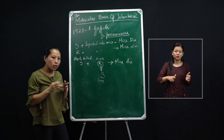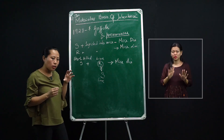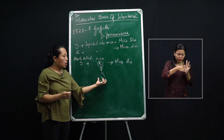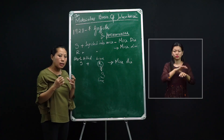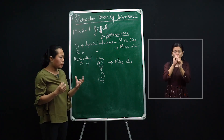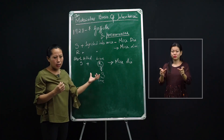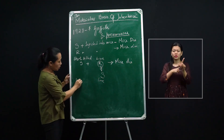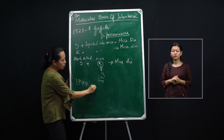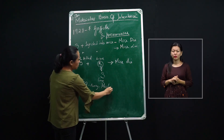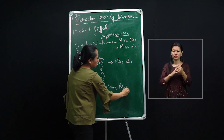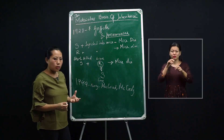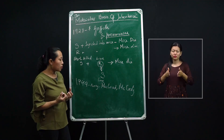However, Griffith could not define the chemical nature of that material. He concluded there is a material which could transform R cells into S strain, but he could not describe exactly what that transforming material was. Many biologists could not accept his experiment. So in 1944, Avery, MacLeod, and McCarty continued with the same experiment to define the chemical nature of the transforming principle.